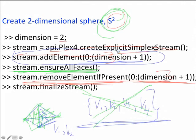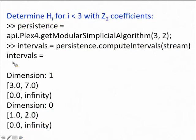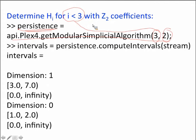Any questions? That's the main way to create simplicial complexes by hand. We will talk about how to create simplicial complexes from point cloud data on Wednesday. We now want to determine persistent homology. This command gets us to calculate our persistent homology — the 3 means I'm determining homology for i less than 3, so we get zero-, one-, and two-dimensional homology but not three-dimensional, and we're using Z2 coefficients.